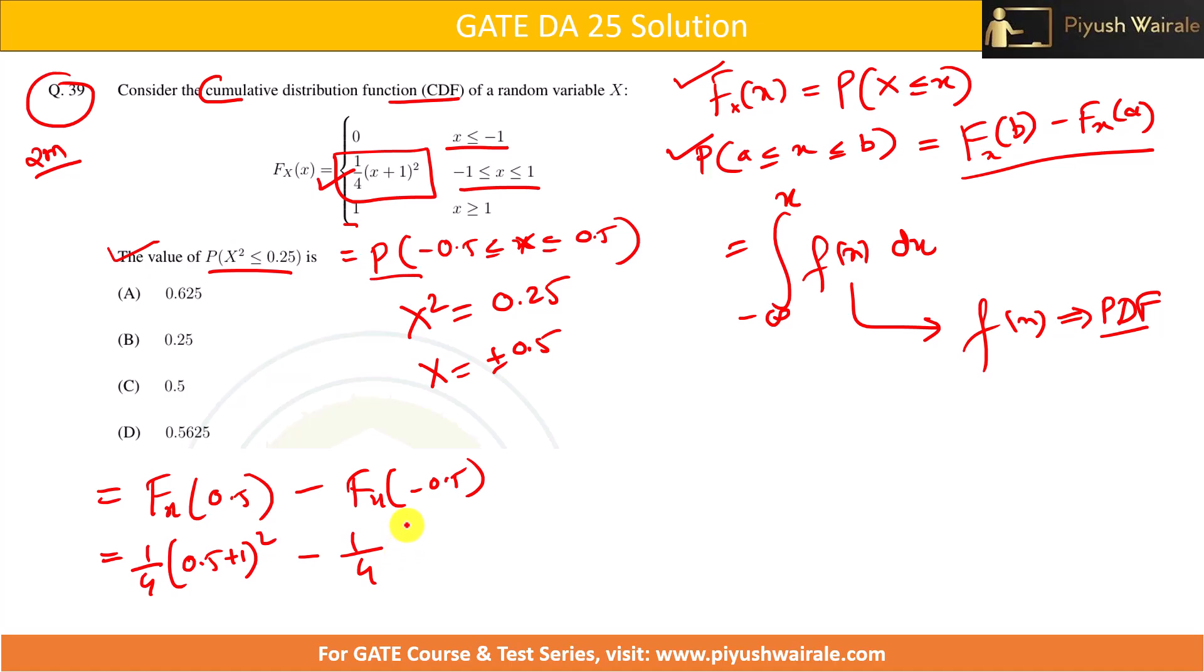You can simplify this. 1/4 will be taken as common. This will be 1.5², that is (3/2)², minus this will be (1/2)².